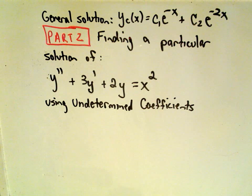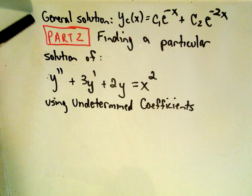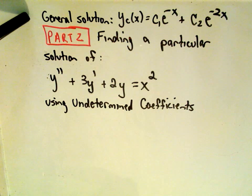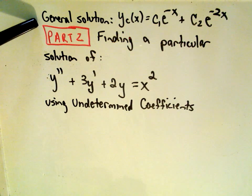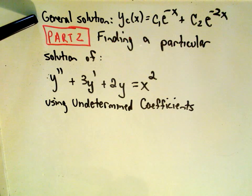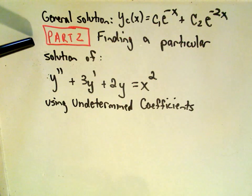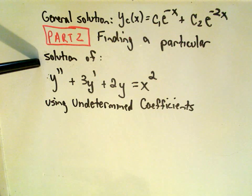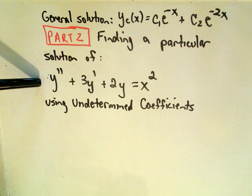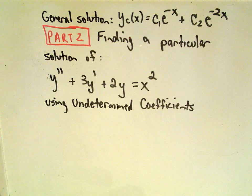Okay, this is going to be part two of my first example of finding a solution to a non-homogeneous second-order linear equation. So in part one, the theorem says you basically have to find a general solution to the complementary equation, which we found in part one. And in part two, it says you have to find a particular solution to your original second-order differential equation that you're given.